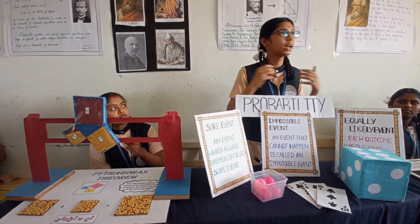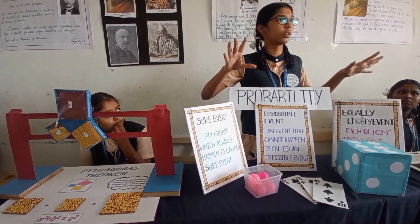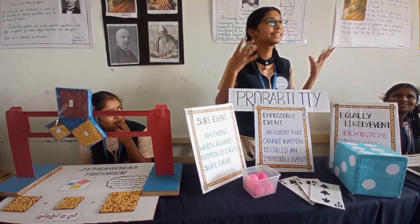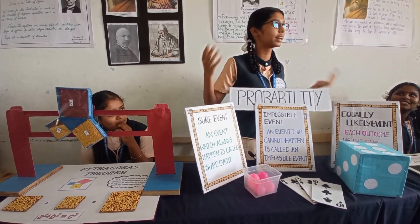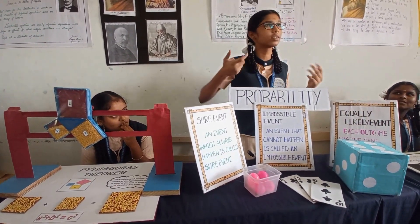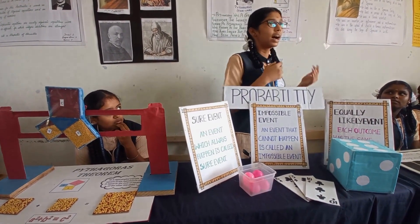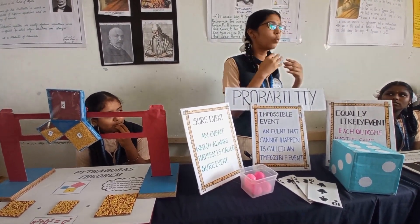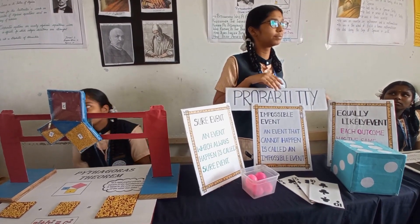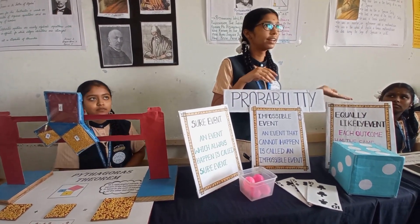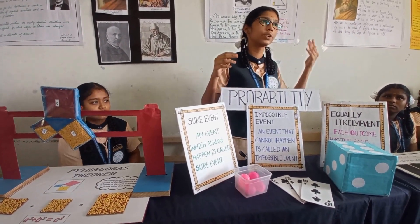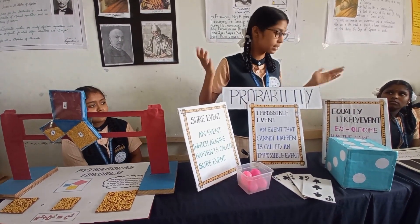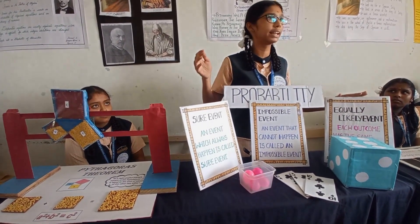First of all, equally likely. Let's imagine there is a cricket match going on — India versus Pakistan. The starting step of cricket is to toss a coin. India chooses tails and Pakistan chooses heads. What do you think — will India get tails or heads? There are 50-50 chances. Tails 50 and heads 50 — this 50-50 chance is known as equally likely.